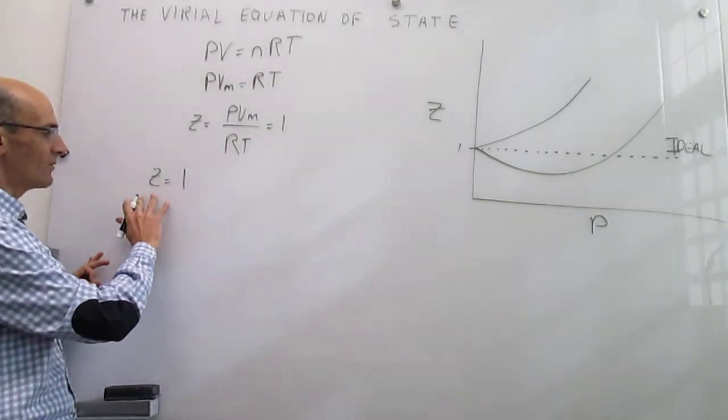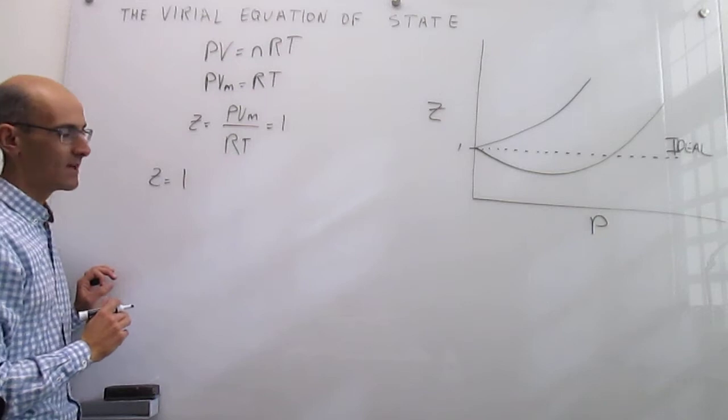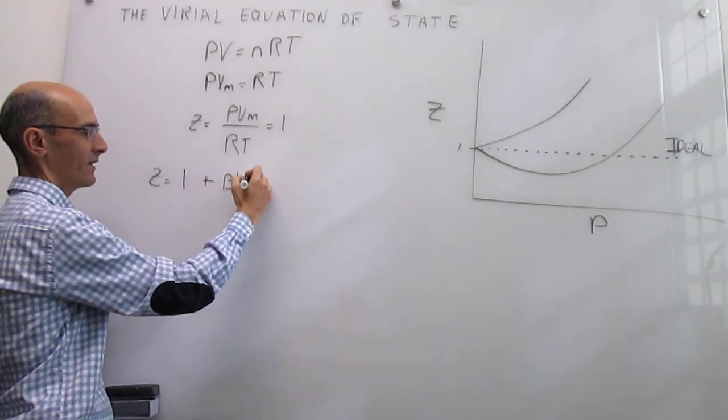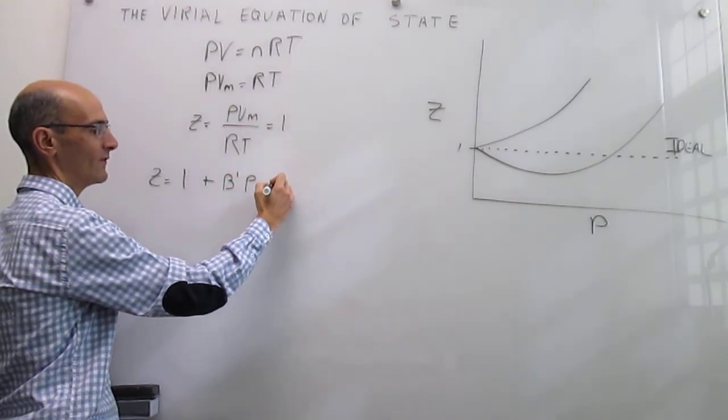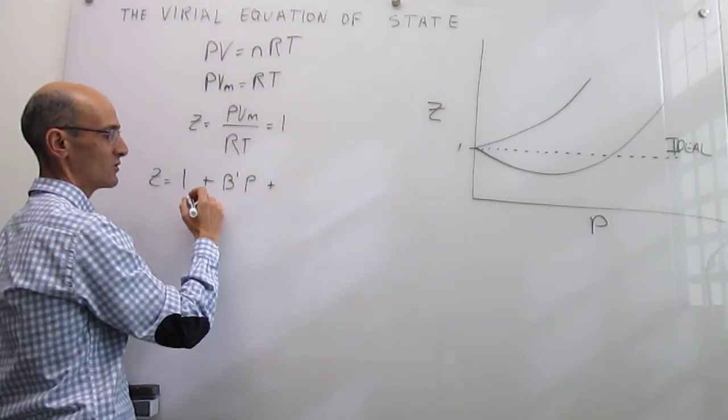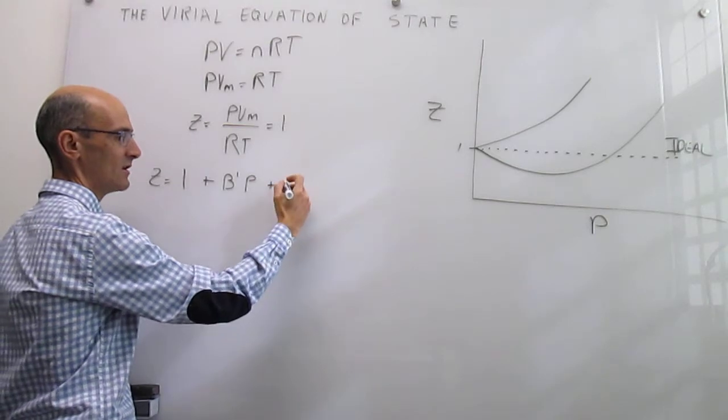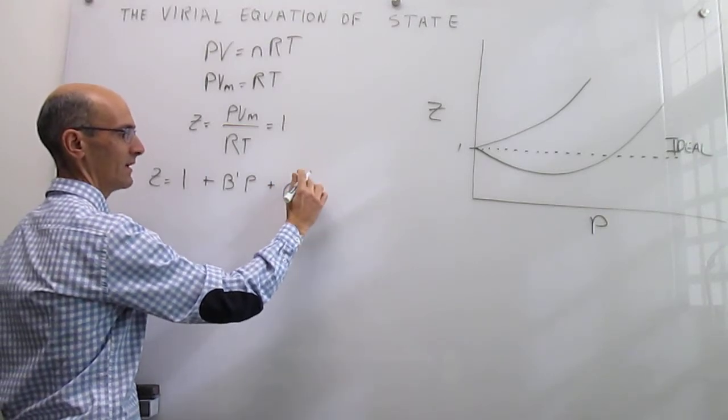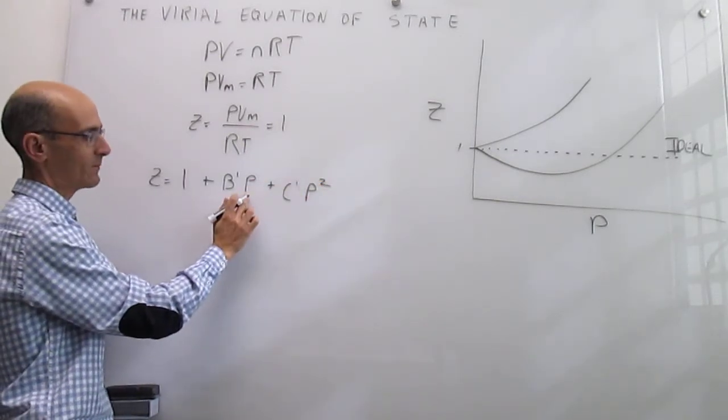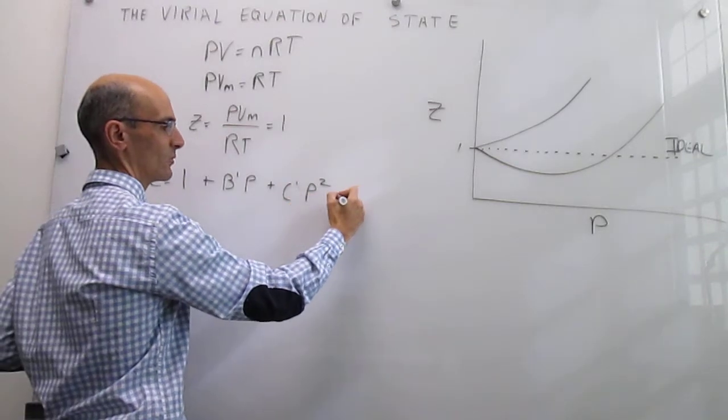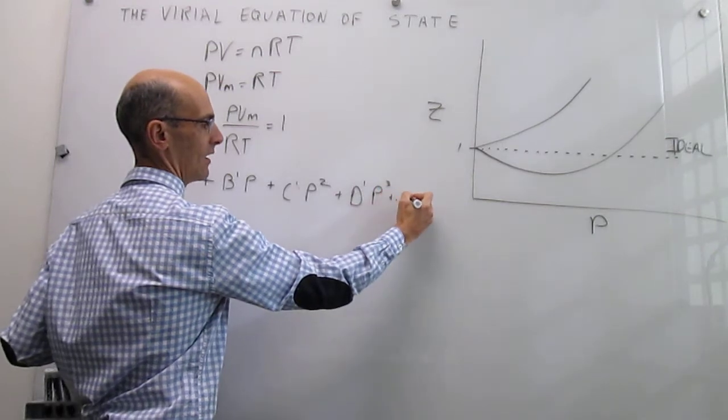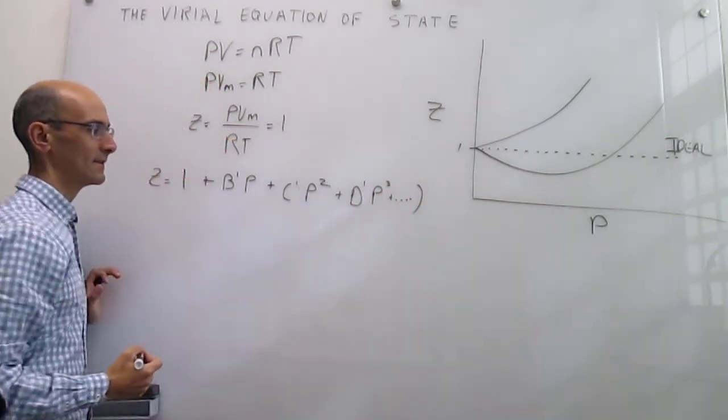So the idea here is that you can try to expand this compression factor into terms that depend on increasing powers of the variable that breaks down the model. So the variable that breaks down the model is the pressure. So you simply come up with an expression that depends on increasing powers of that variable. This is a constant B' multiplying P plus C' multiplying P squared plus another constant D' P cubed, and you can do this all the way until infinity if you want to. This is an expansion.